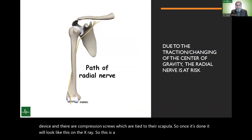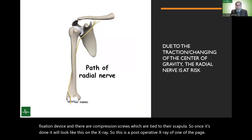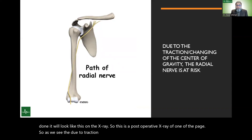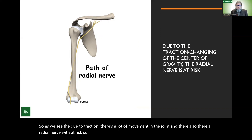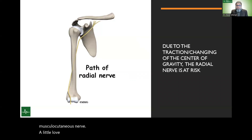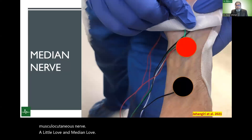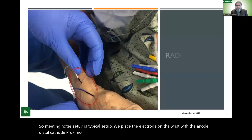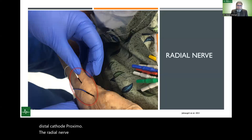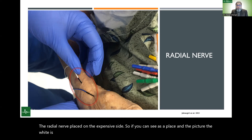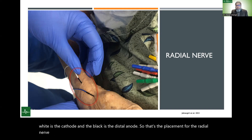Due to traction and significant movement in the joint, the radial nerve is at risk. Beside the radial nerve, the other nerves at risk are the musculocutaneous nerve, ulnar nerve, and median nerve. For the median nerve setup, we place the electrode on the wrist with the anode distal and cathode proximal. For the radial nerve, electrodes are placed on the extensor side — the white is the cathode and the black is the distal anode — for stimulating the SSEP.